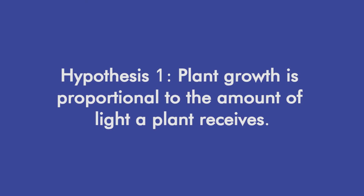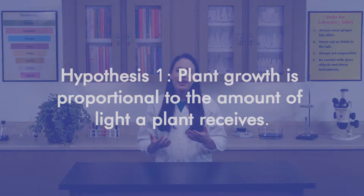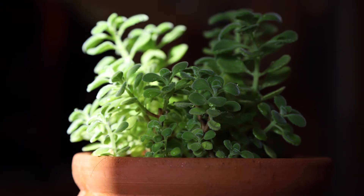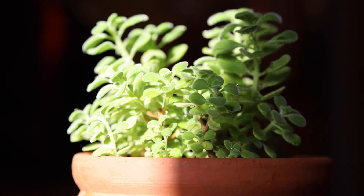In the first experiment, we will test this hypothesis: plant growth is proportional to the amount of light a plant receives. In other words, as the amount of light increases, the amount of plant growth should also increase. The variable for this experiment is the amount of light, which is measured in hours. The outcome is the growth of the plant.